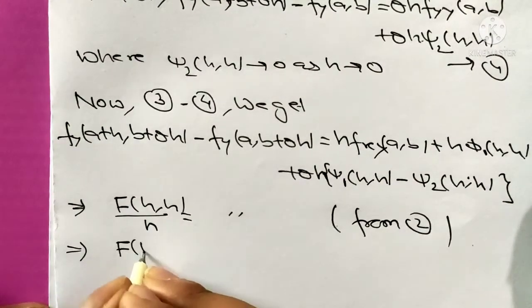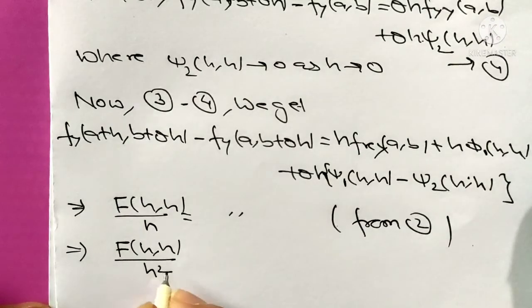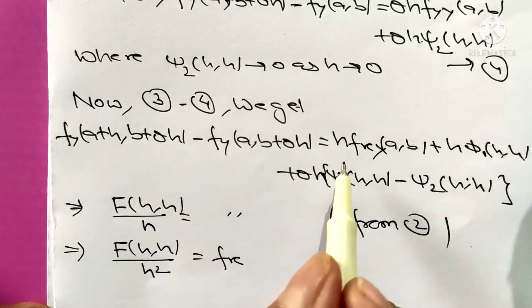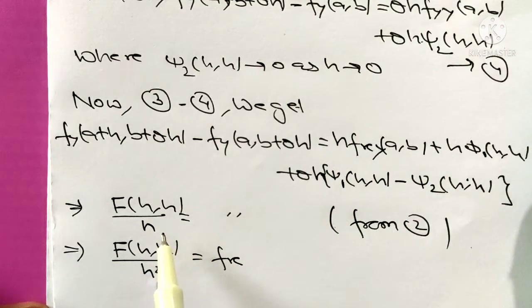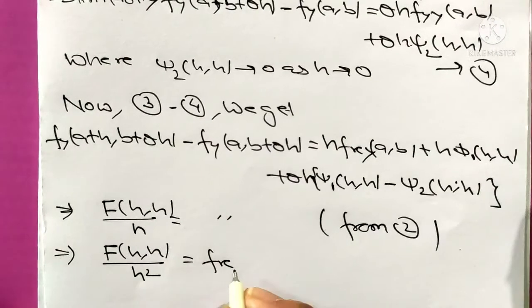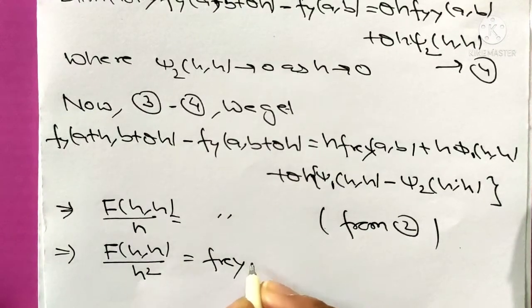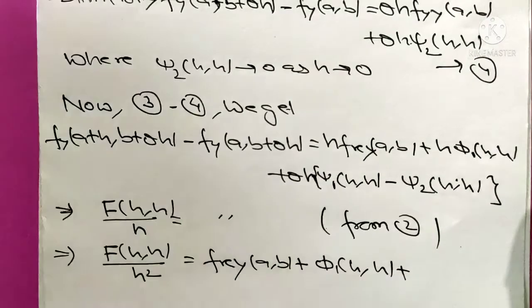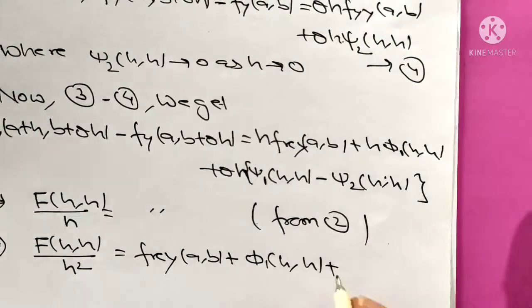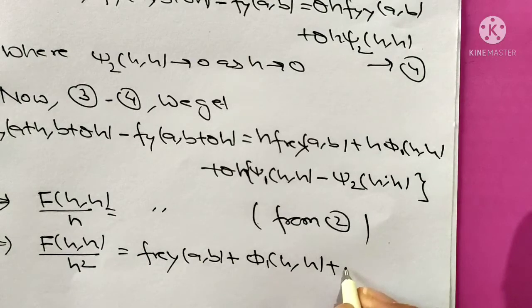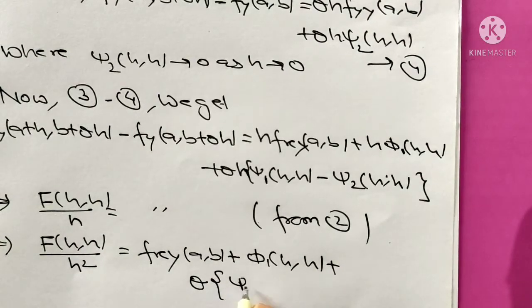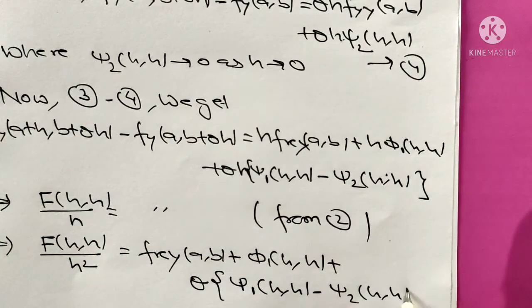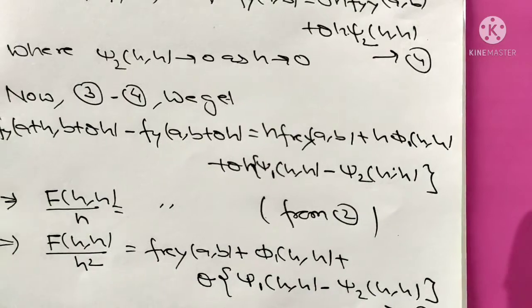F(h,h) upon h² equals fxy(a,b), keeping h common from this side and multiplying it with denominator. This will become h² and write the same: plus φ1(h,h) plus θh[ψ1(h,h) minus ψ2(h,h)]. Give it equation 5.